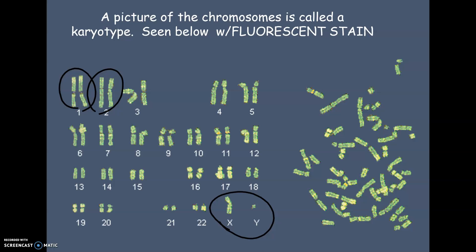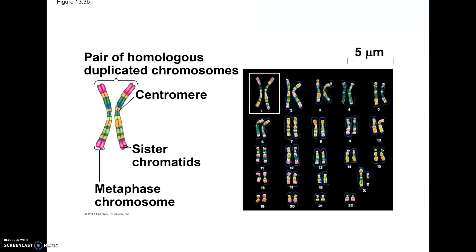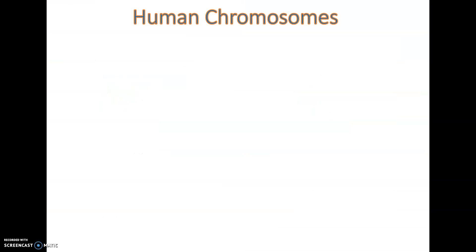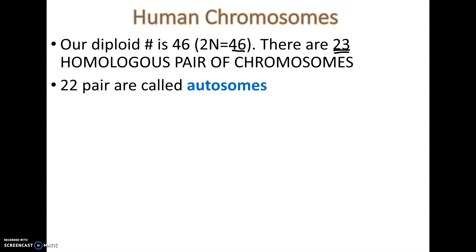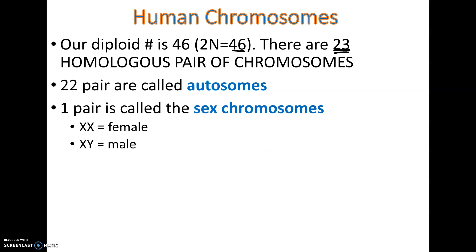In a human karyotype there are 46 chromosomes total. Our diploid number is 2n = 46, meaning we have 23 homologous pairs. Twenty-two of those pairs are called autosomes, and the last pair is called the sex chromosomes: XX is female and XY is male.